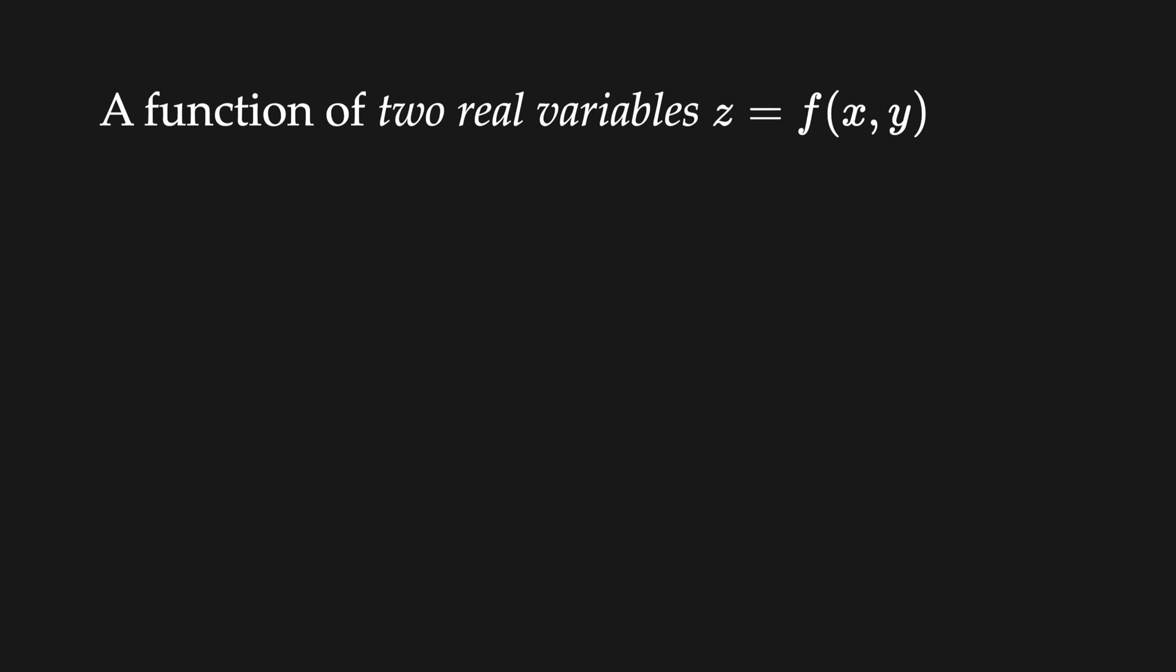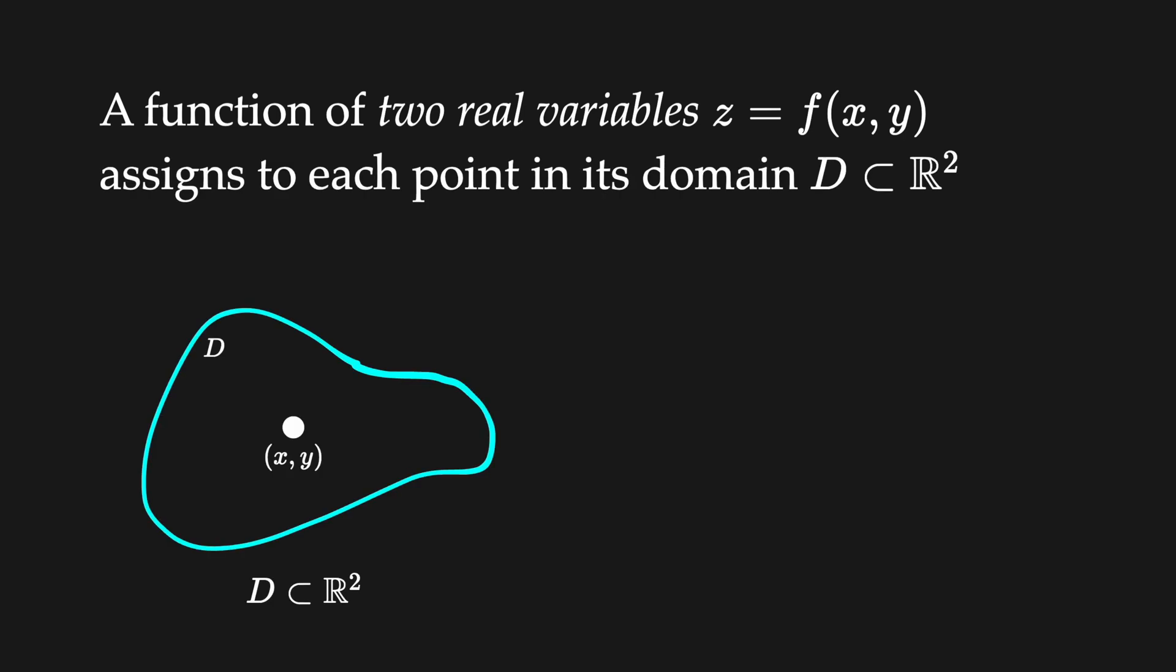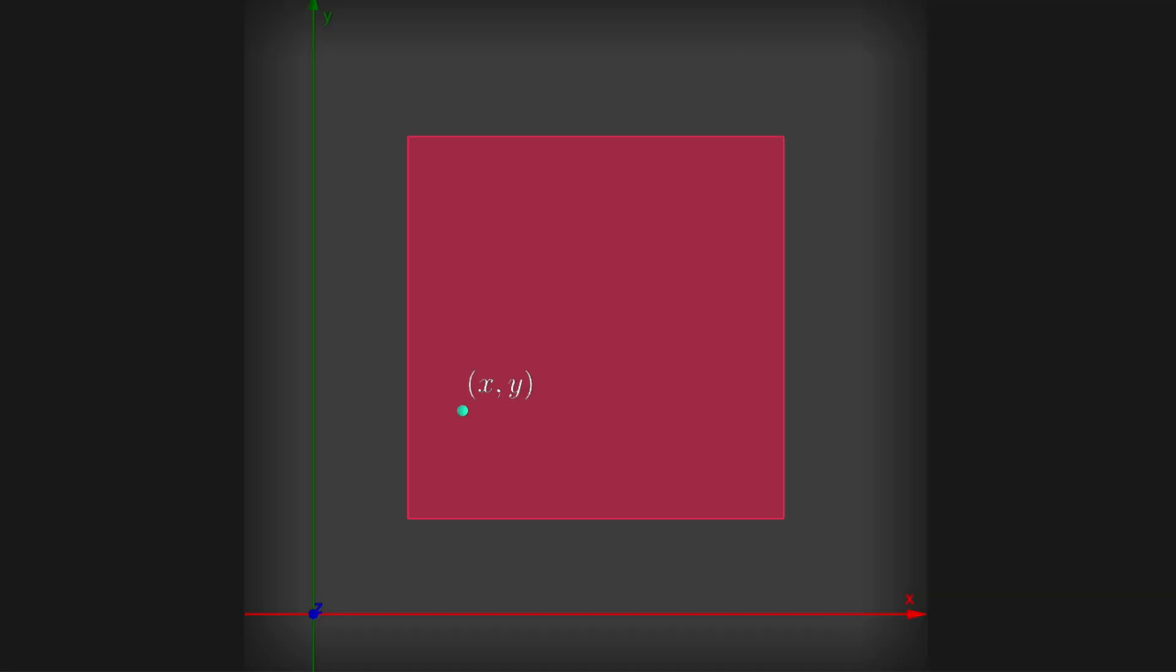A function of two real variables assigns to each point in its domain in the plane a unique real number. We can visualize the graph of a two real variables function by considering a subset in the plane.